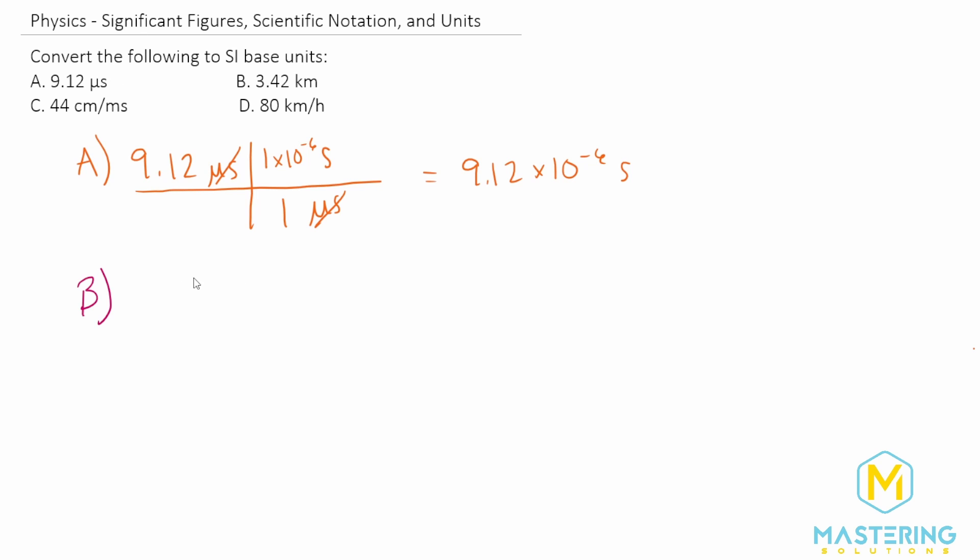So let's go on to part B. They want us to change 3.42 kilometers and in standard units that's just going to be meters. So if we treat this like a fraction, we know we want the kilometers to go away and we want it to be in standard units for distance, which is meters. So in one kilometer, there is a thousand meters. So now we're just multiplying 3.42 by a thousand. So we'll move the decimal place over three.